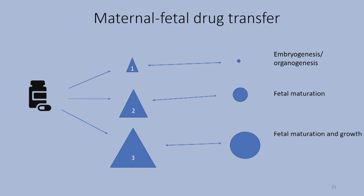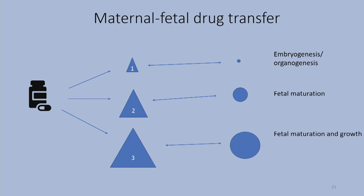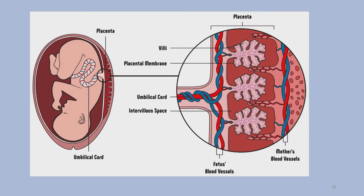When talking about pregnancy, we are talking about both the mother and the fetus. In terms of fetal drug transfer across the three trimesters: in the first trimester there is embryogenesis and organogenesis, the period most sensitive to teratogenic potential. In the second trimester there is fetal maturation and growth, which is even more dramatic in the third trimester with increased fetal maturation and growth.